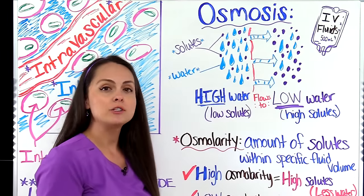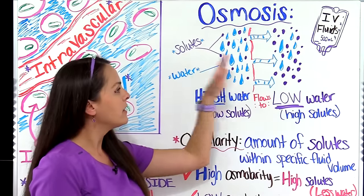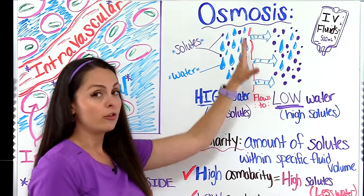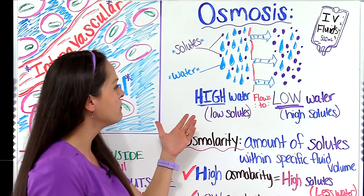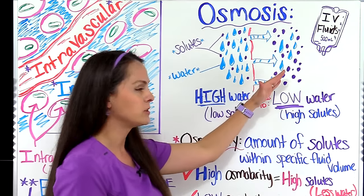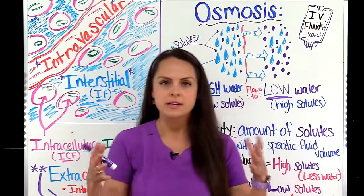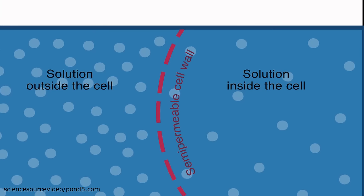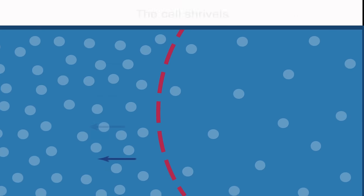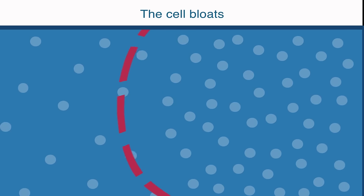Let's illustrate this process by looking at this drawing. Here we have our semi-permeable membrane, which is only permeable to water. On one side of the membrane, we have a lot of water molecules but not a lot of solutes. On the other side, we have not a lot of water molecules but a lot of solutes. According to osmosis, water is going to move from a higher concentration of water to a lower concentration of water — or put another way, from where there are not a lot of solutes to where there are a lot of solutes.